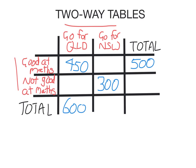So in each cell is the number of students in each category. This 450 here means the student goes for Queensland and is good at maths — so there are 450 students who support Queensland who are also good at maths. Now, some questions you will have to finish off the two-way table. The rightmost column and the bottom row are totals, so we're going to finish this table and then use it in some probability questions.